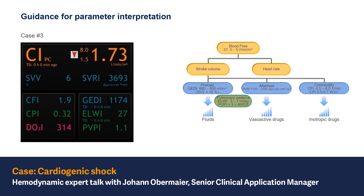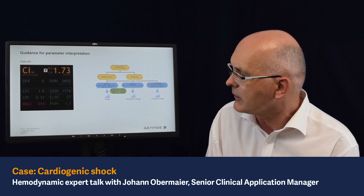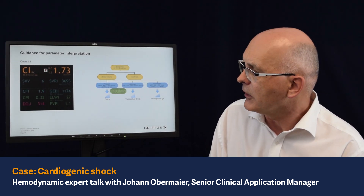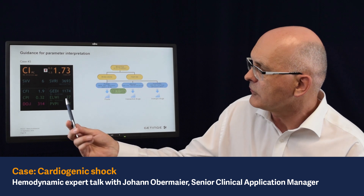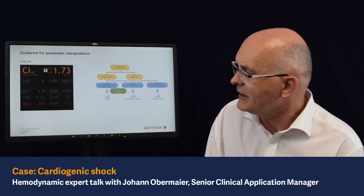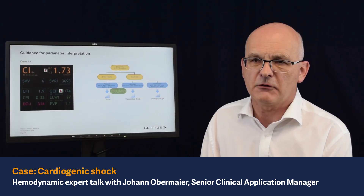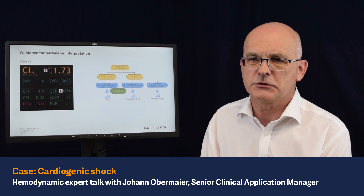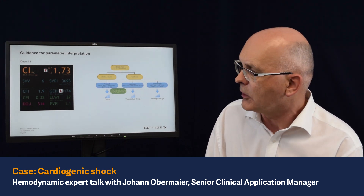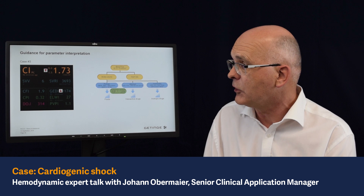As always, we look at the determinants of the cardiac index, starting with the preload. The global end-diastolic volume index shows a value of nearly 1200, which in relation to the normal range is extremely high. So this patient has clearly a fluid overload due to some reason — we don't know why for the moment, but we see a clear fluid overload.